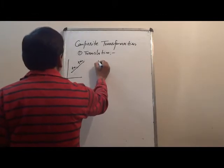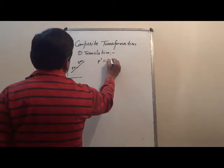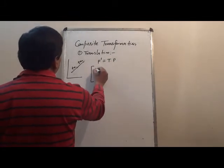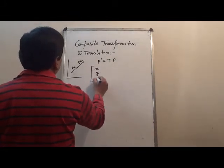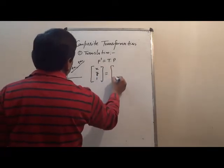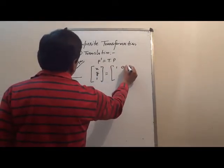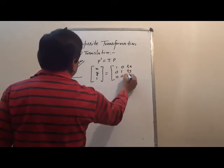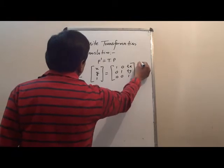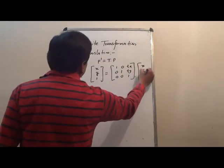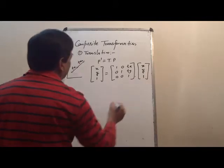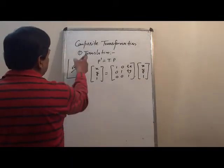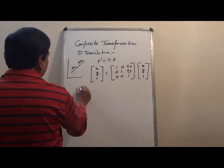For a single transformation we get P' equals to T into P. What we get: x, y, 1 equals to the matrix [1, 0, Tx; 0, 1, Ty; 0, 0, 1] into P, where P is x, y, and 1.